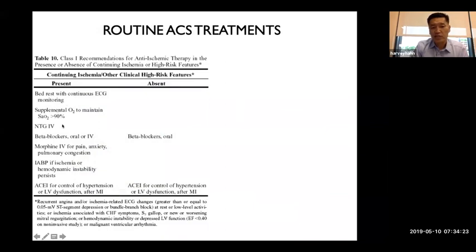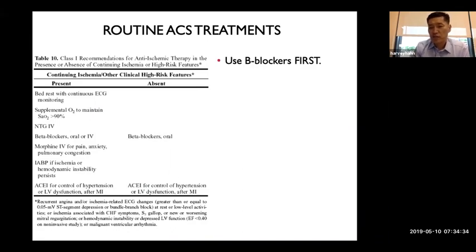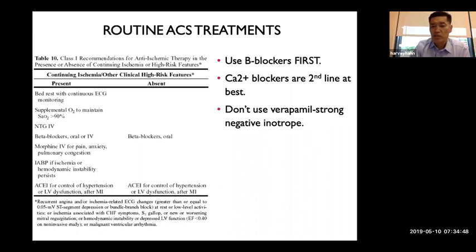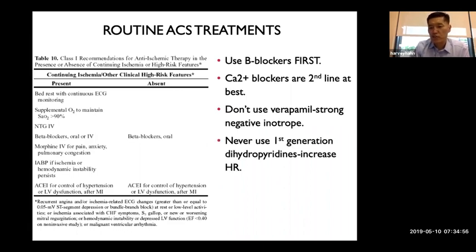Key medications include supplemental oxygen, nitroglycerin (IV or oral), beta blockers, and morphine. Beta blockers are used first because they decrease cardiac death within the first 30 days. Calcium channel blockers like verapamil or diltiazem are second-line. Avoid first-generation calcium channel blockers like nifedipine or norvasc because they increase heart rate, which is counterproductive.